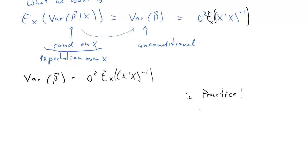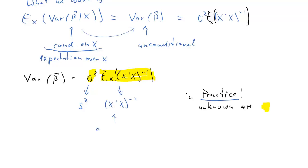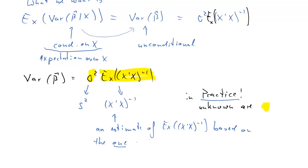The question arises: how do we deal with this in practice? In practice, both sigma squared and the expectation of x prime x inverse are unknown. For sigma squared we use the sample variance of the residuals. For the expectation of x prime x inverse, we simply use x prime x inverse — which is an estimate of that unknown expectation, based on the one observation we have of our matrix x.